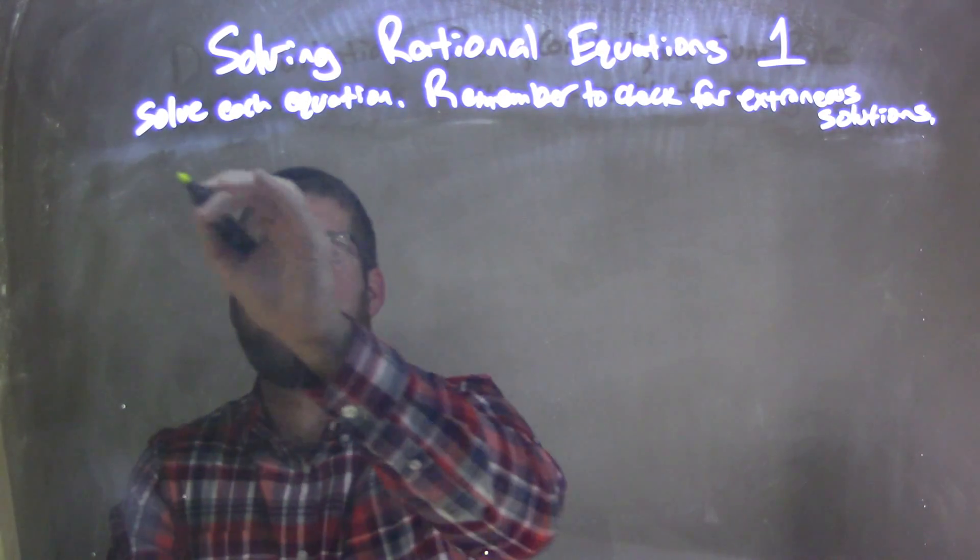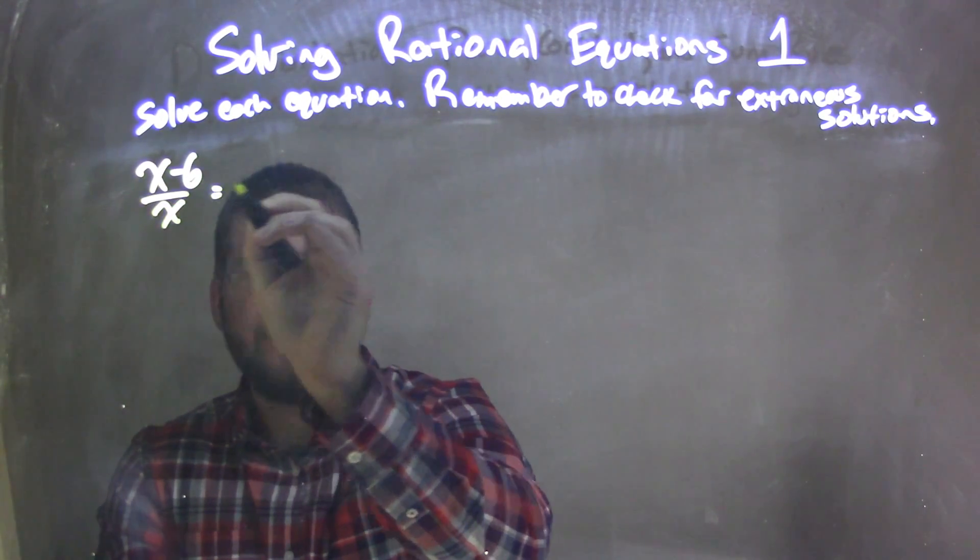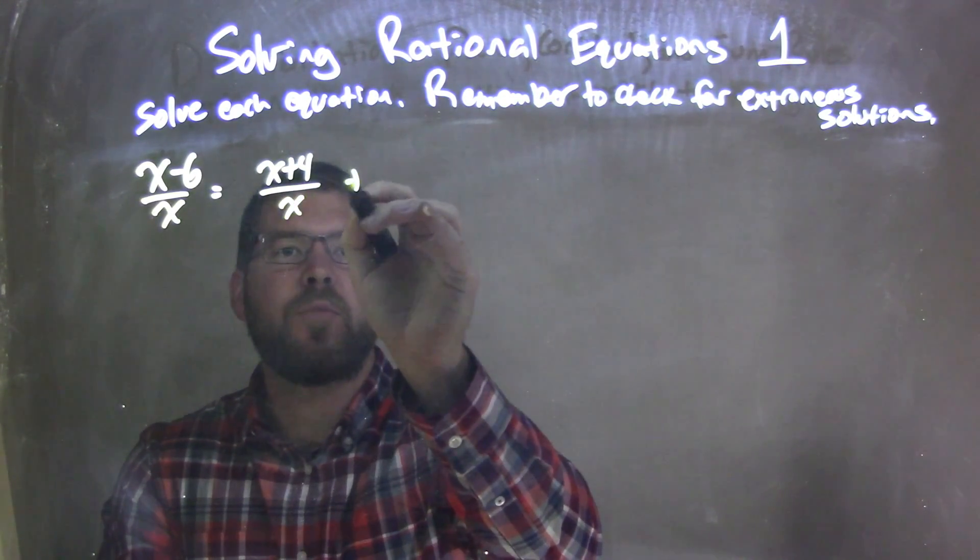So if I was given this equation: x minus 6 over x is equal to x plus 4 over x plus 1.